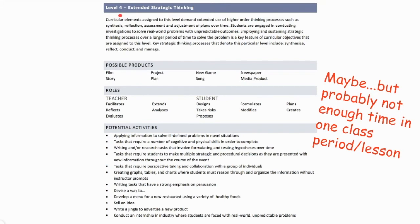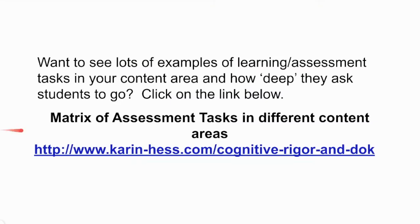At a depth of four, we are asking our students to engage in extended strategic thinking. This is when we ask students to engage in higher-order thinking processes such as synthesis, reflection, assessment, and adjustment of plans over time. Instead of single, simple problems, students are asked to employ and sustain strategic thinking processes over a longer period of time to solve larger, more open-ended problems. Though it's important to engage students in level four tasks, they often aren't able to be completed in a single class period or lesson.